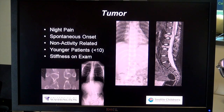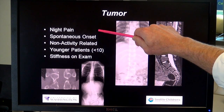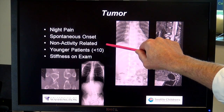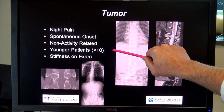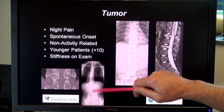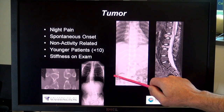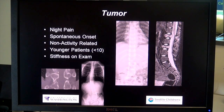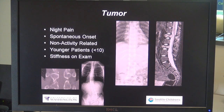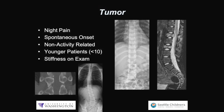When we see kids with bony tumors or intraspinal tumors, the classic findings are pain at night — usually spontaneous, slow onset, not specifically related to activity, present at rest as much as with activity. It's often in younger patients, and classically they have stiffness on physical exam — they look really stiff and awkward when they try to move and stand with an unusual appearance. This is a young child with leukemia who has multiple bony abnormalities and back pain, visualized on a lateral x-ray showing compression fractures at multiple areas.